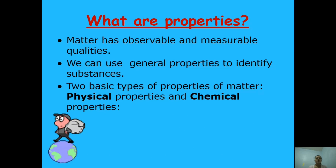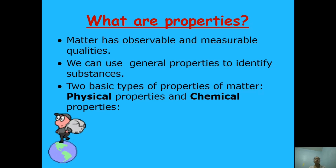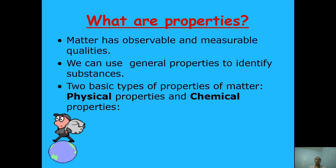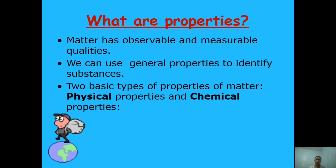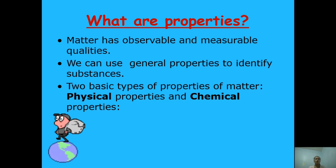But before that, let us know what a property is. Matter has observable and measurable qualities. We can use general properties to identify substances. The two basic types of properties of matter are physical properties and chemical properties. When we say properties, those are the observable and measurable qualities of certain things. There are two types: physical and chemical properties. Let's discuss them one by one.